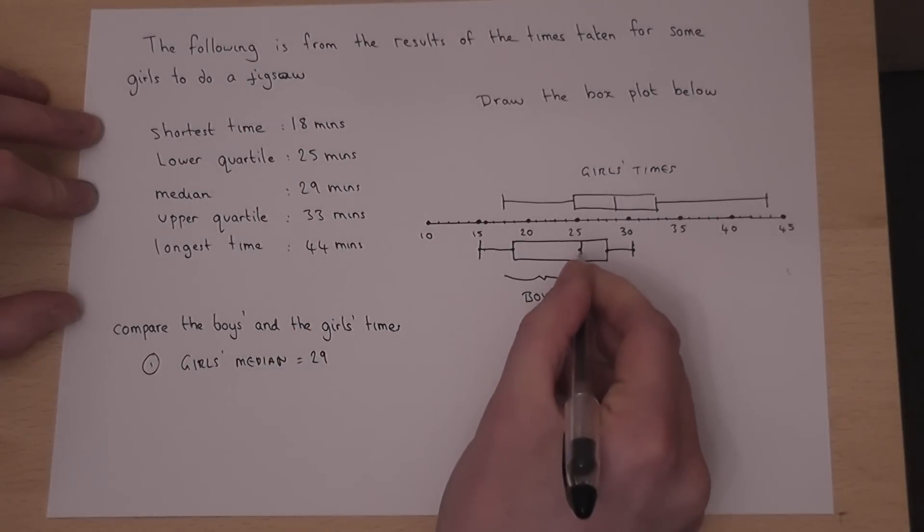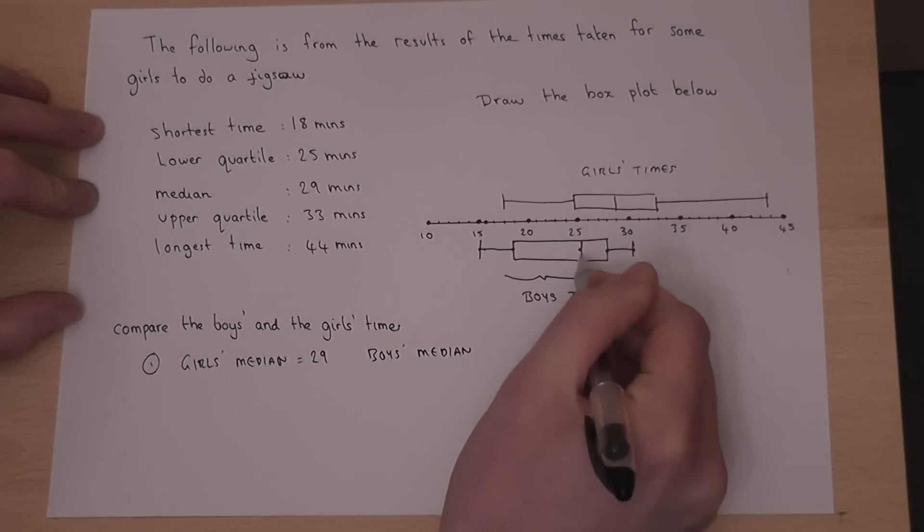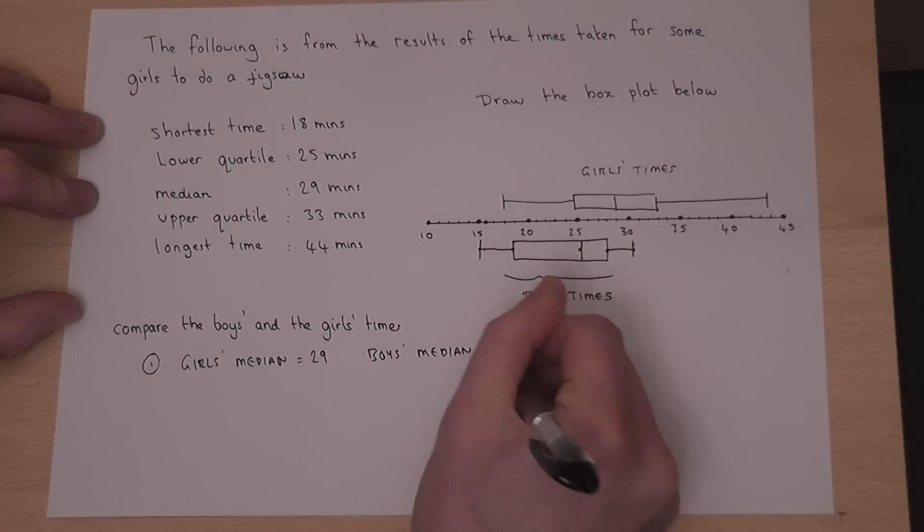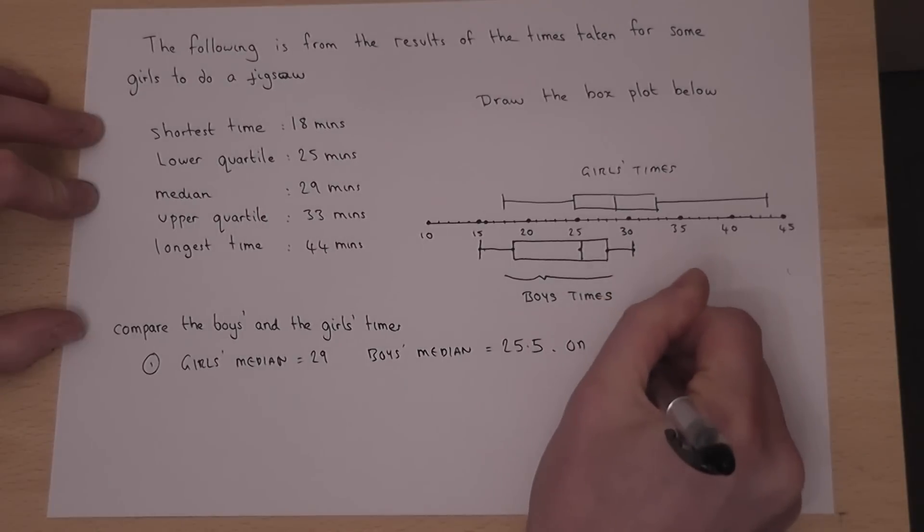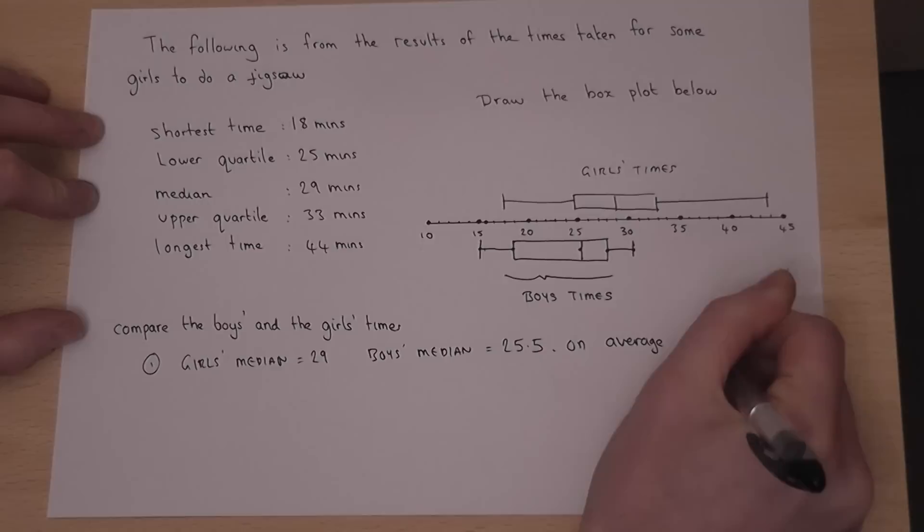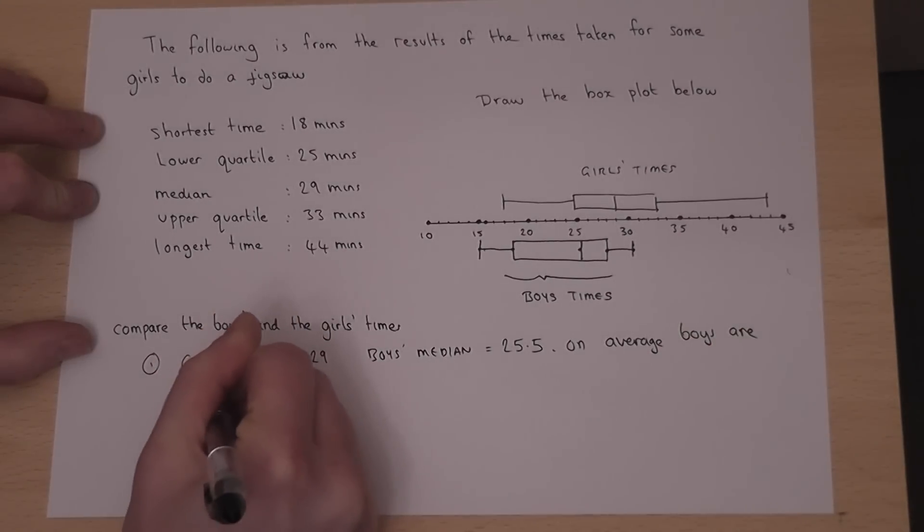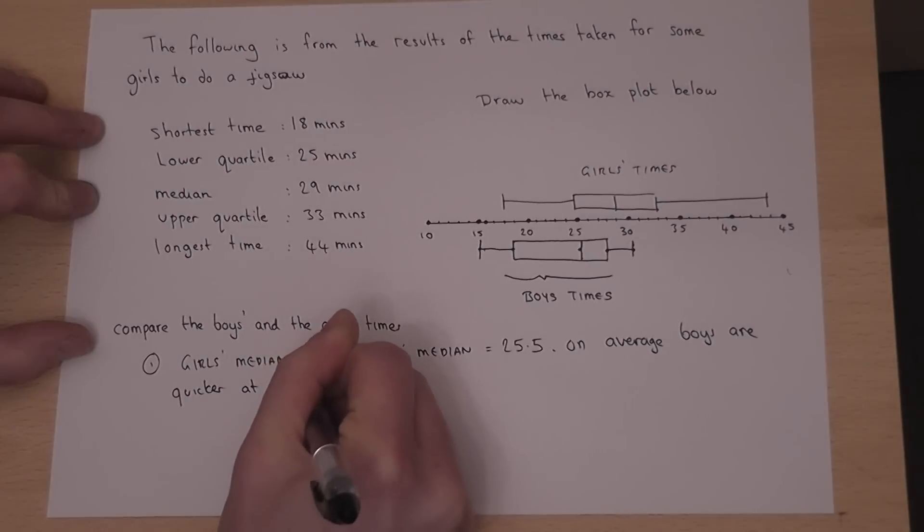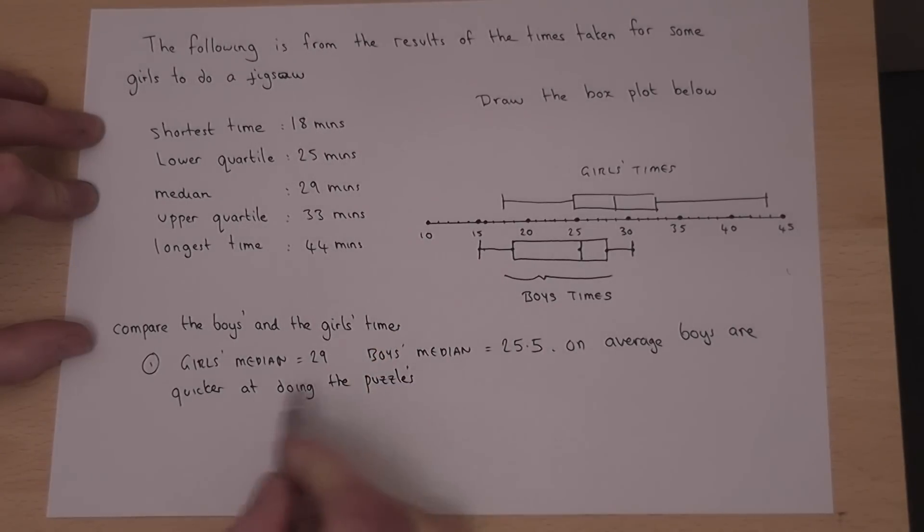But the boys' median is lower. That is only 25.5. So this means that, on average, the boys are quicker at doing the puzzles, because their median is lower than the girls' median.